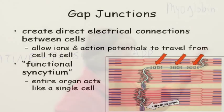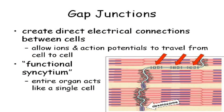Because of the gap junctions, the heart itself acts like a functional syncytium. You still have individual cells — they haven't fused — but because of the gap junctions, when one cell contracts, all the cells electrically connected to it contract together. So that's what I mean by functional syncytium.